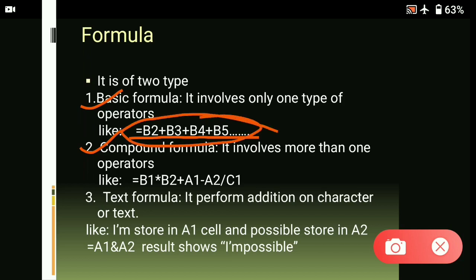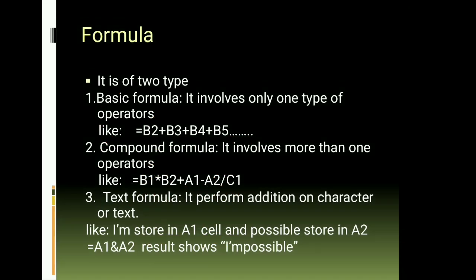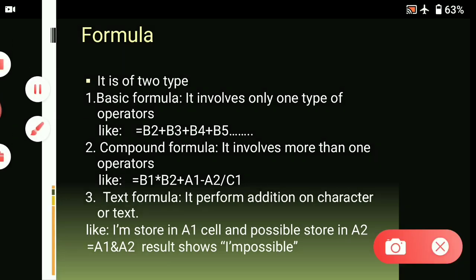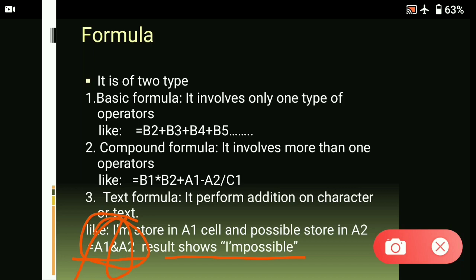But in a compound formula, there are different types of operators. It involves more than one operator, like the asterisk which represents multiplication and the slash which represents division. A compound formula has more than one operator. And the last type is the text formula — it performs addition on characters or text. For example, if you store 'I am' in cell A1 and 'possible' in cell A2 and you want to join both words, you write the formula as: equal to A1 & A2. Here, '&' represents concatenation. All formulas start with the equal to sign. If you write this formula in the formula bar, you get the combined result.